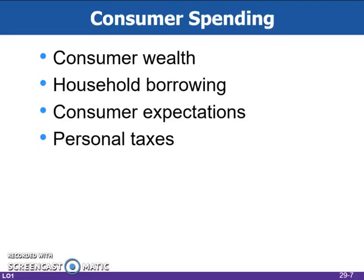Consumer spending is impacted in several ways other than price levels. Consumer wealth is the difference between household assets, which include things like homes or stocks and bonds, and liabilities, which include loans or credit cards. As asset values increase, consumers spend more; as asset values decrease, consumers spend less. Households can borrow to spend more, which increases aggregate demand in the short run, but in the long run the household reduces spending to pay off debt, and aggregate demand decreases. Expectations of future higher incomes or higher prices will increase current household spending and shift aggregate demand to the right, while expectations of lower income or lower prices will decrease it. A reduction in personal income taxes increases disposable income and increases spending, which increases AD. An increase in taxes will decrease disposable income and decrease household spending, which in turn decreases aggregate demand.